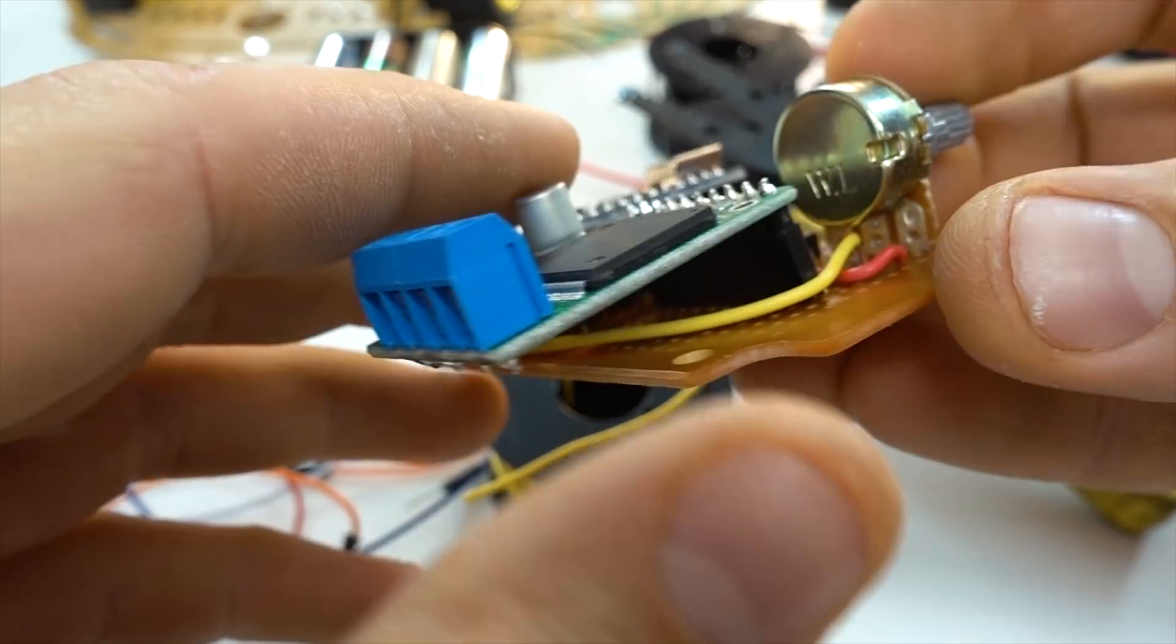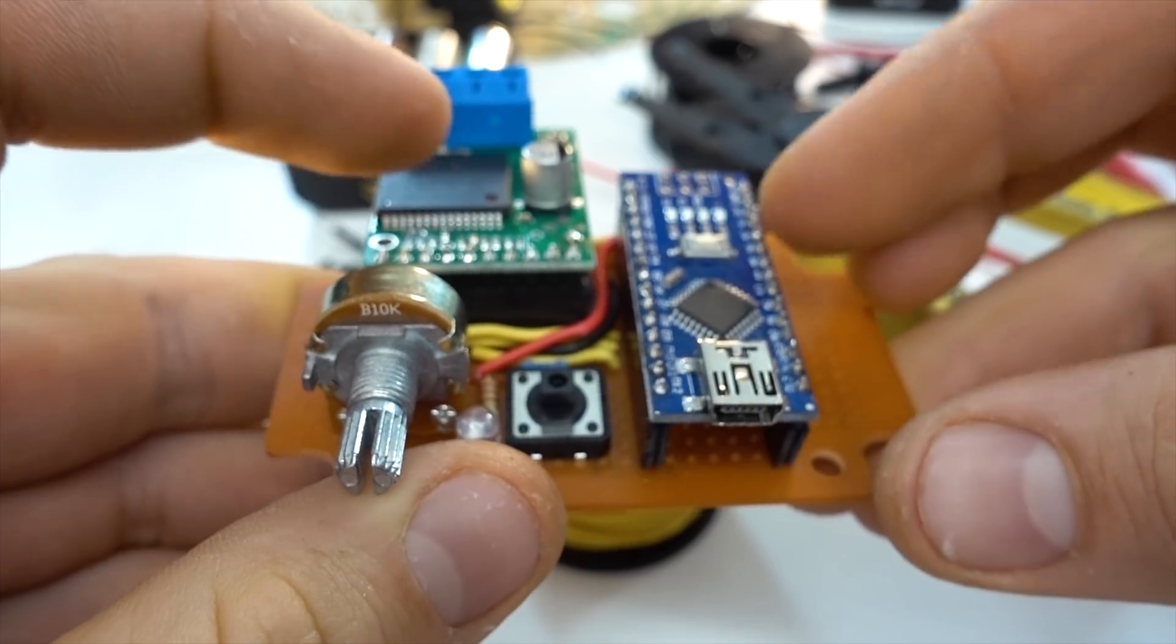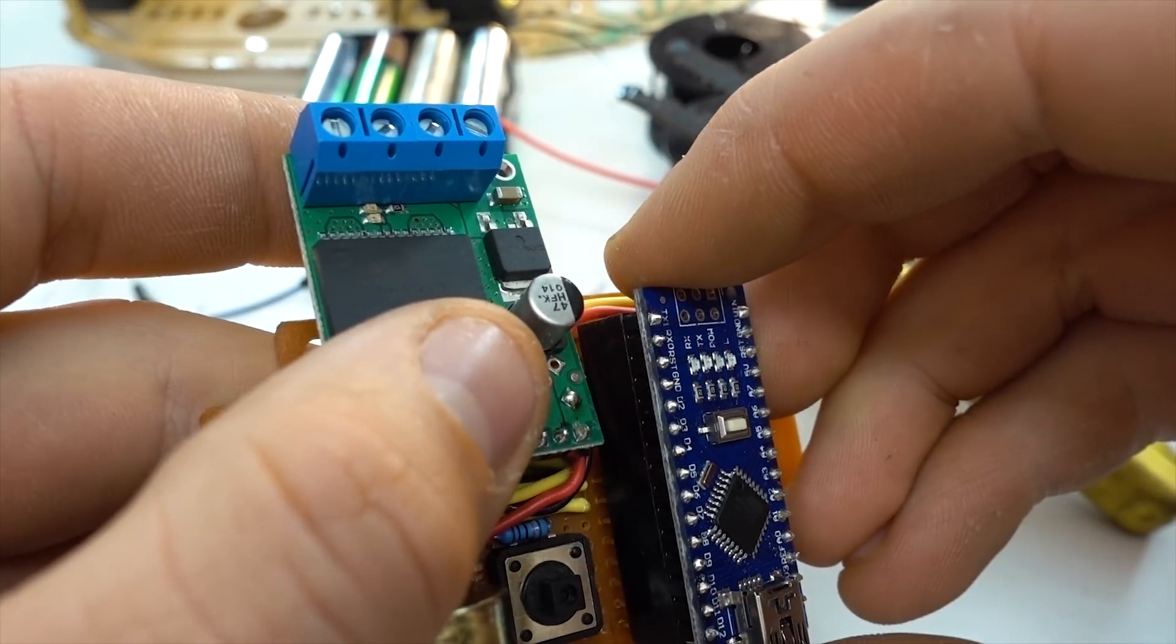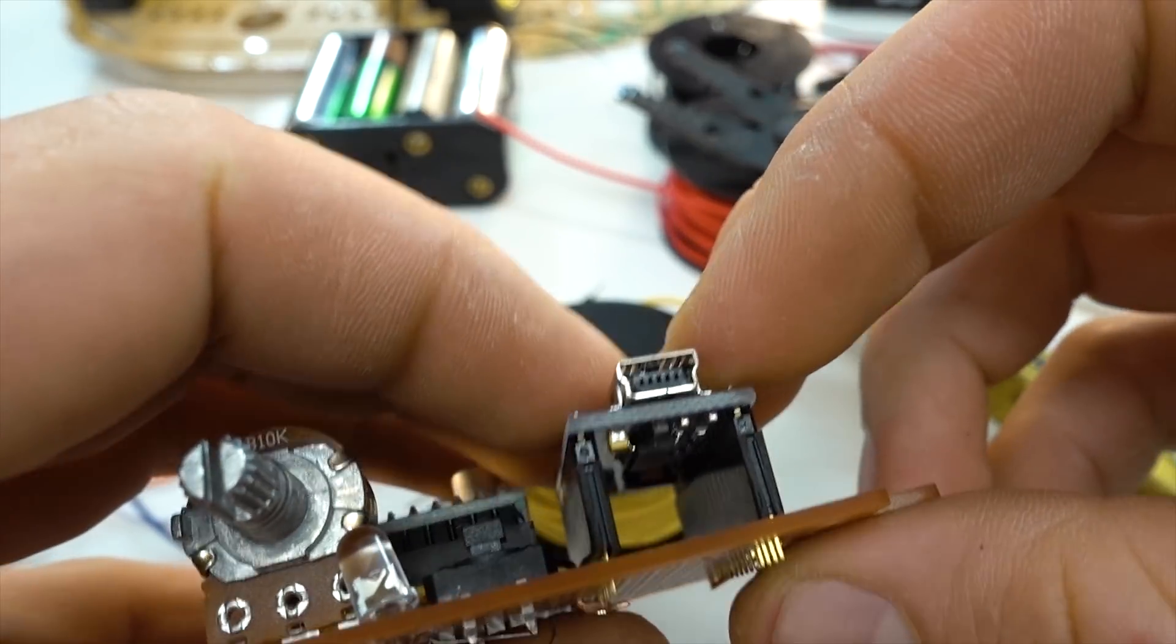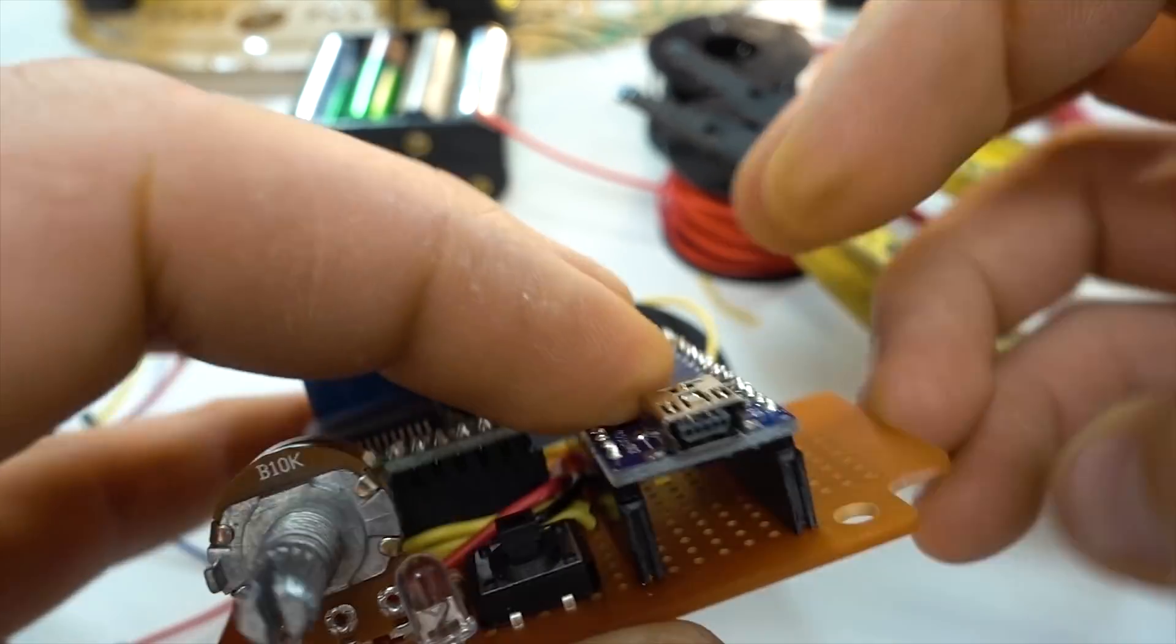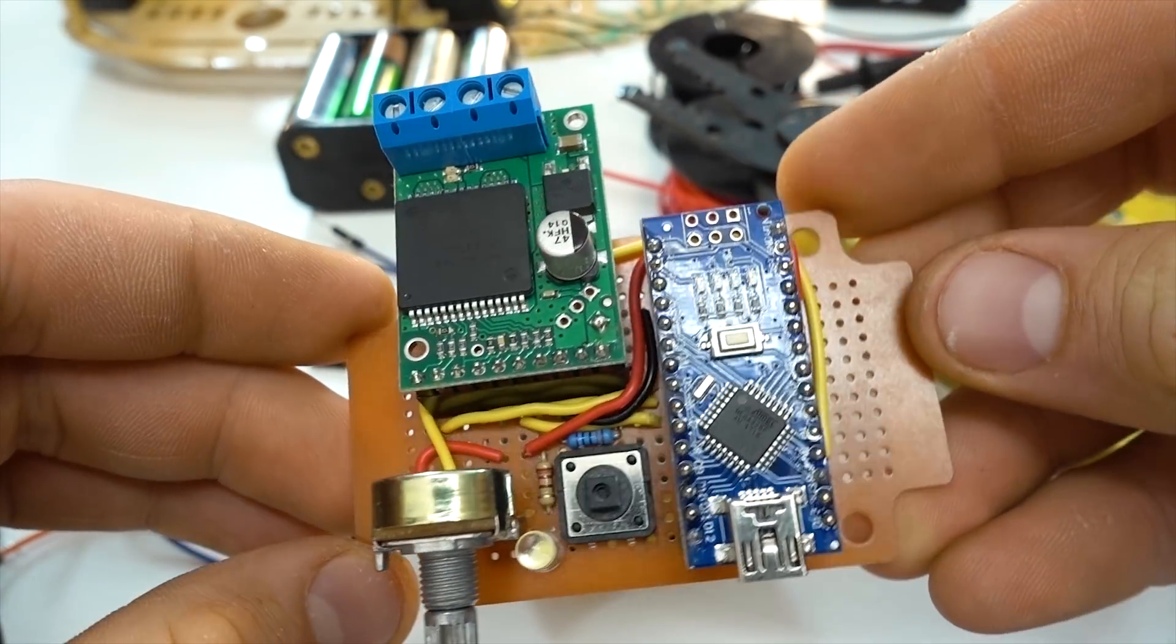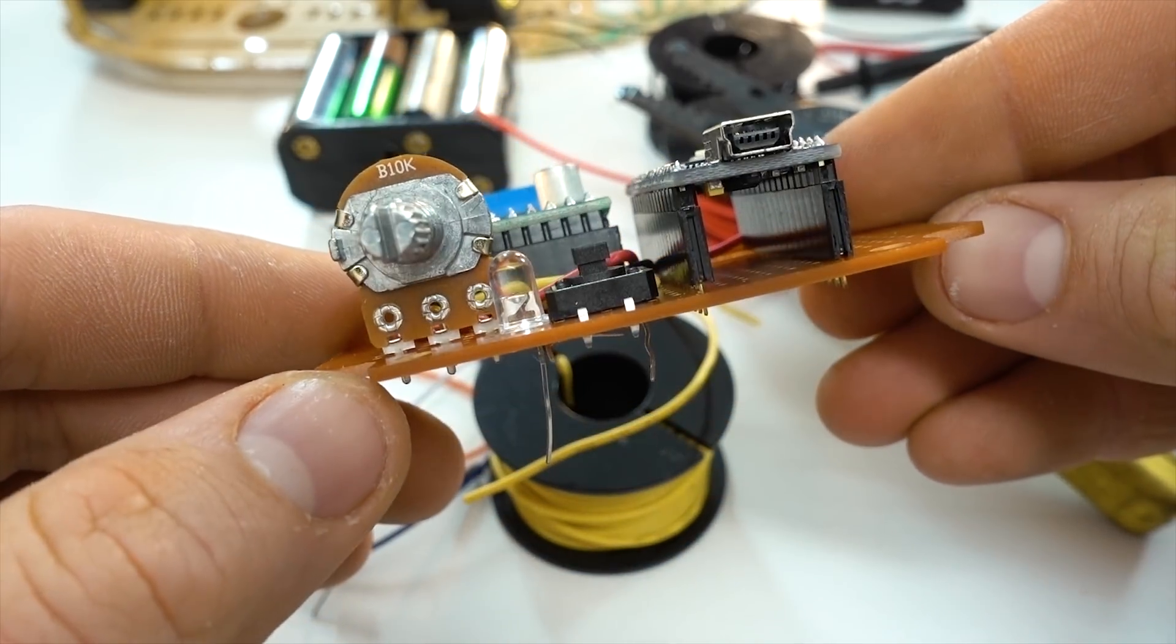So I made a last minute decision to add these headers. Instead of soldering the Arduino and the motor controller directly to the board, I've added these headers so that I will be able to pull the Arduino out in the future should I need to, but apart from that, I'm pretty much fully completed wiring, and now it's just time to solder all to the board.